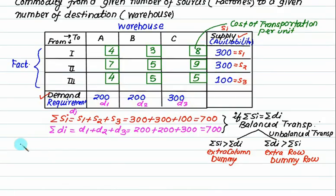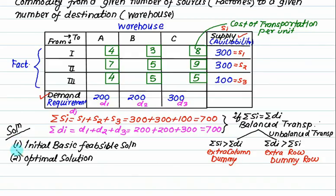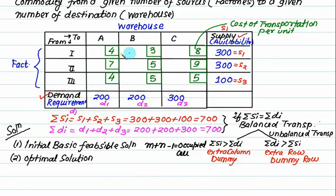The solution is prepared in two steps. First, obtain the initial basic feasible solution, and then go for the optimal solution. To check the initial basic feasible solution: if m represents the number of rows and n represents the number of columns, then m plus n minus 1 must equal the number of occupied cells.